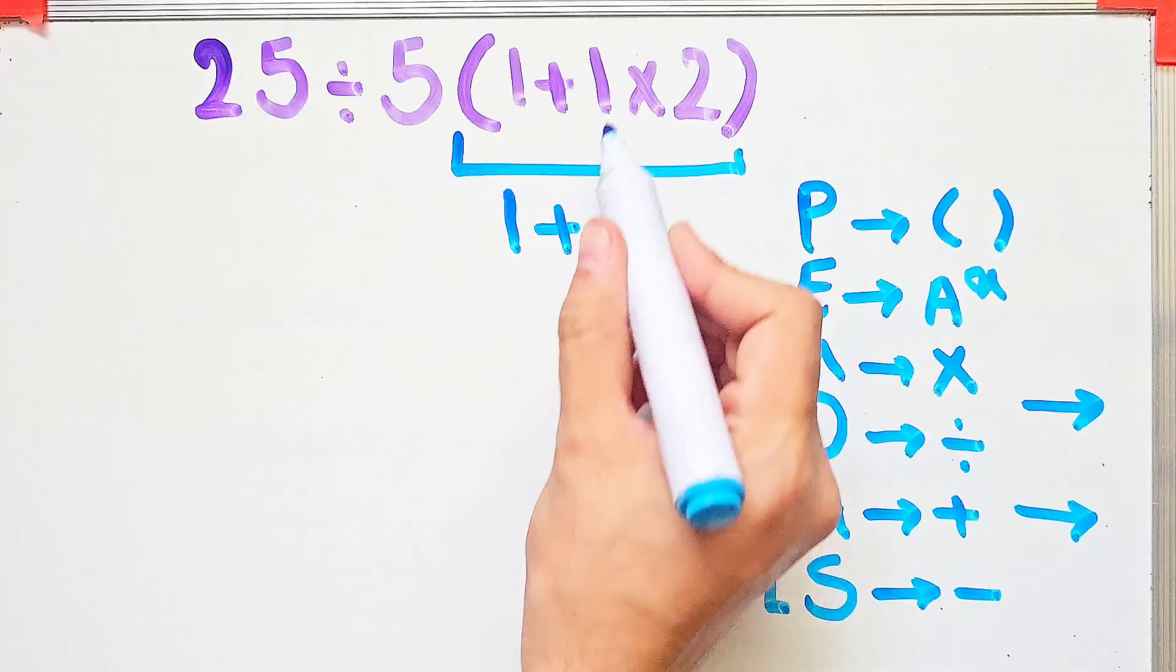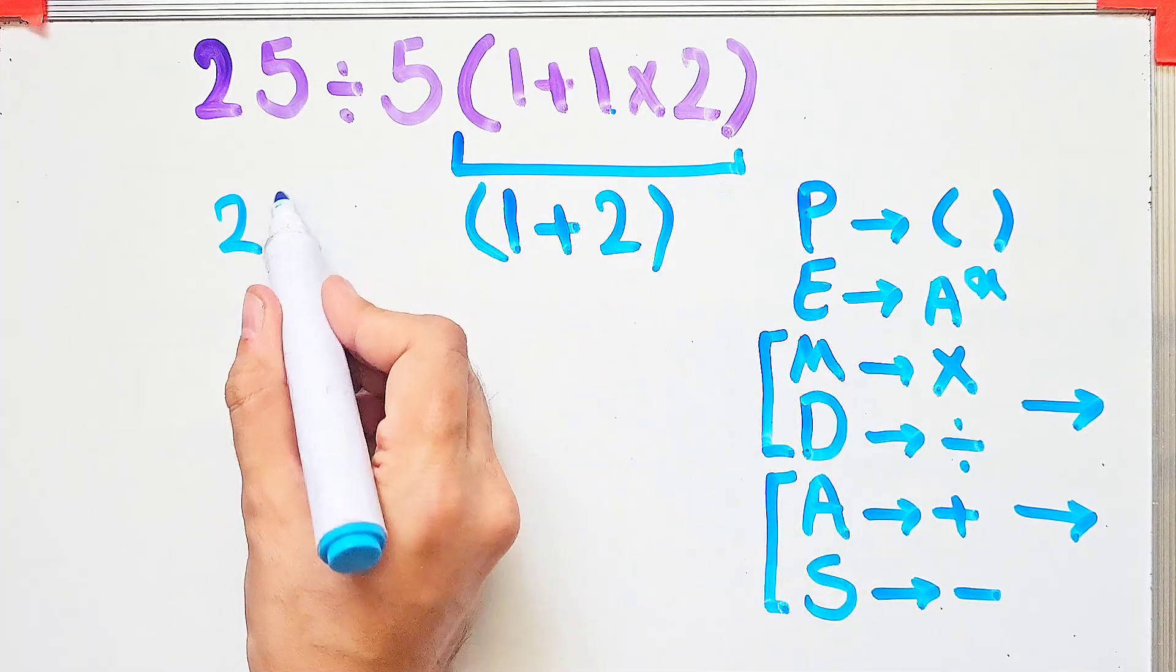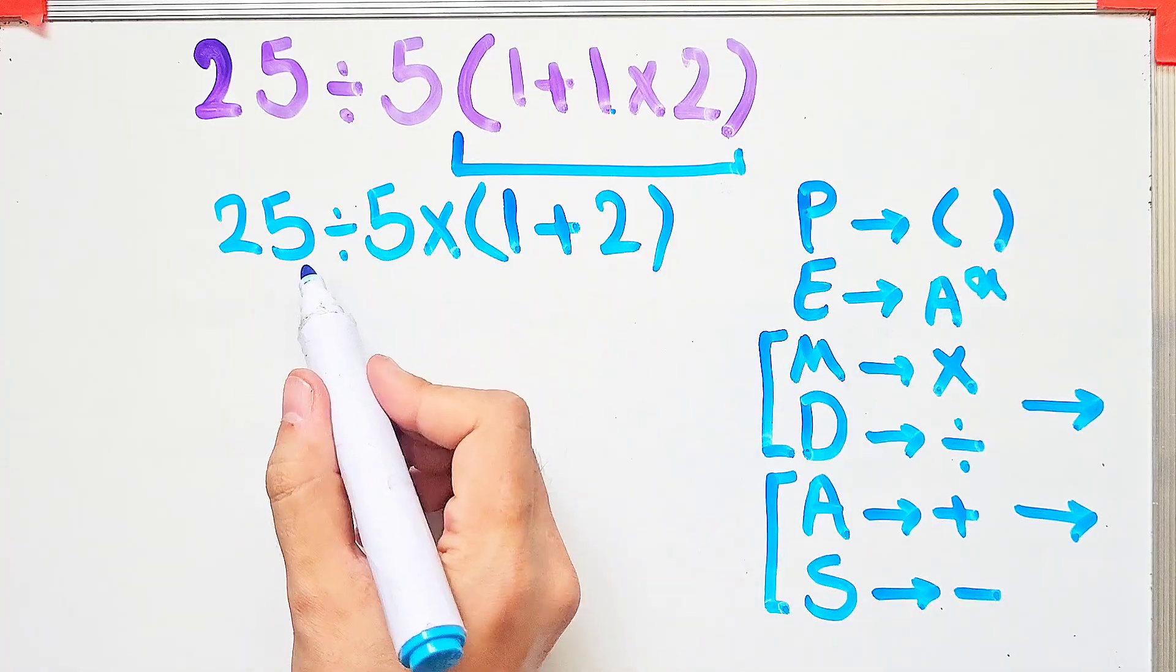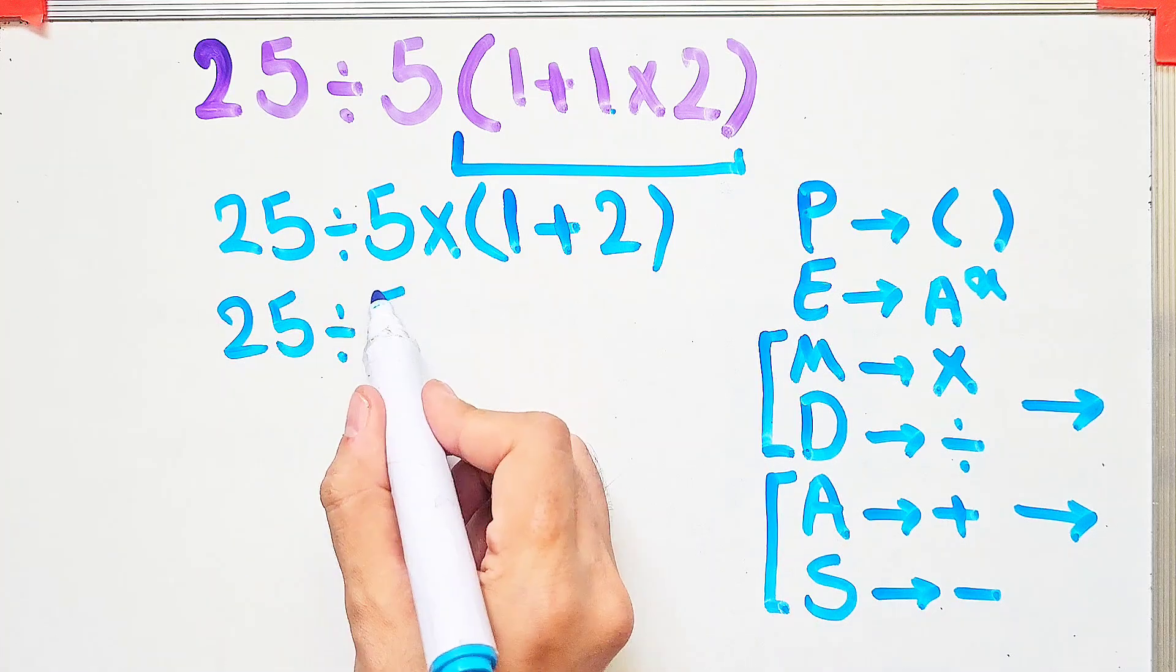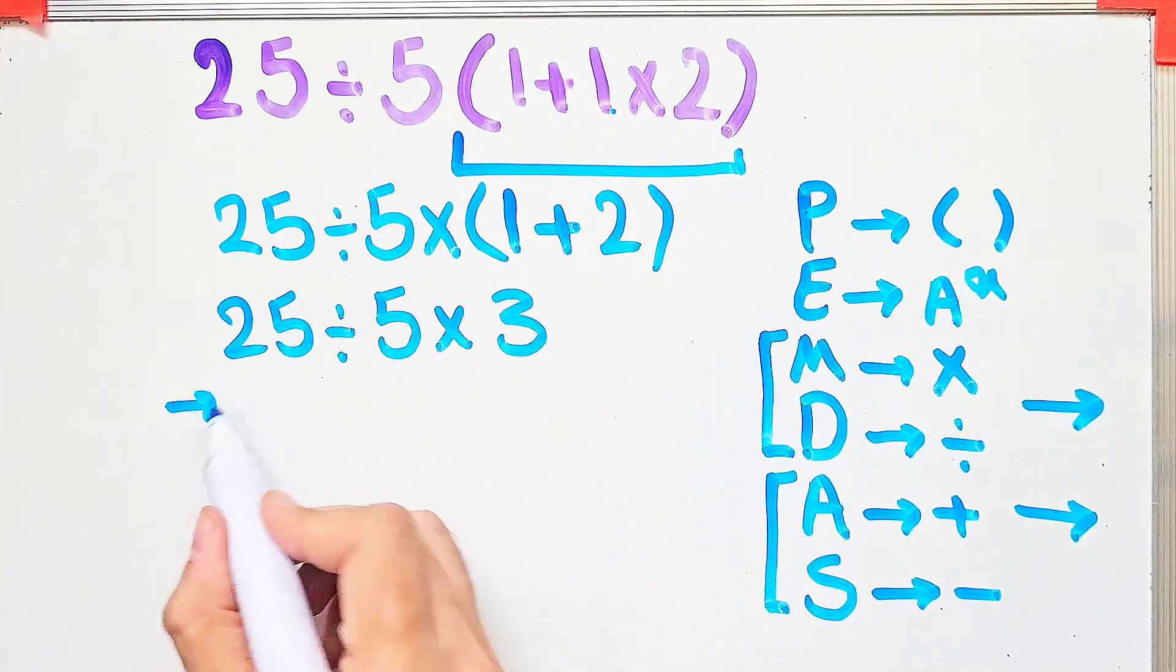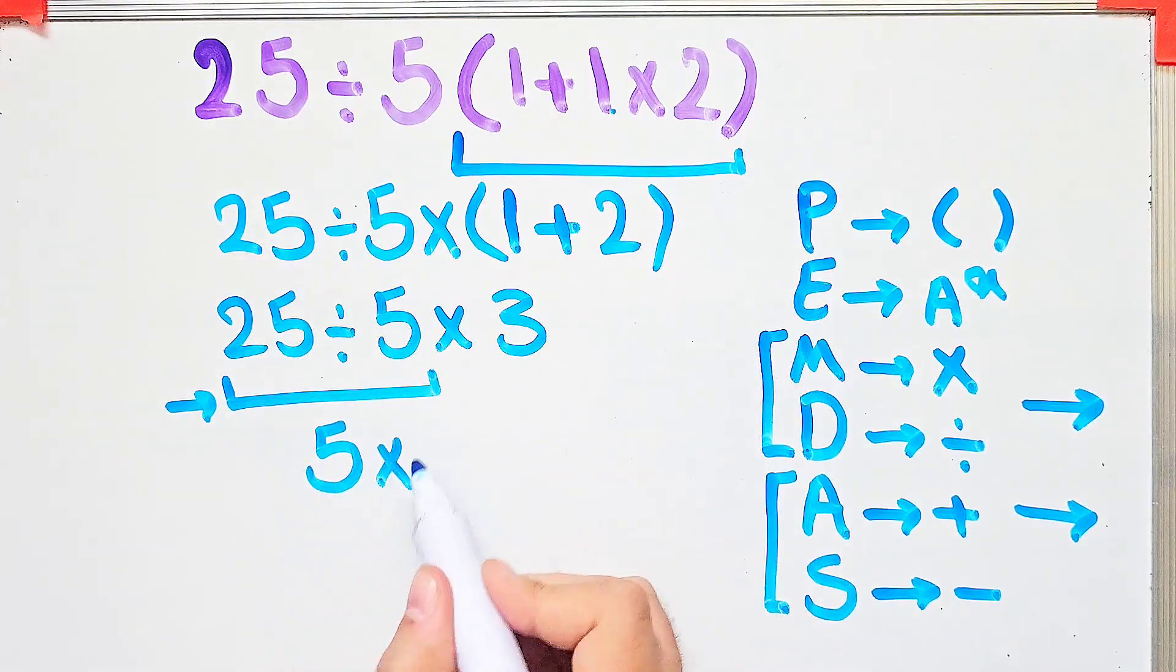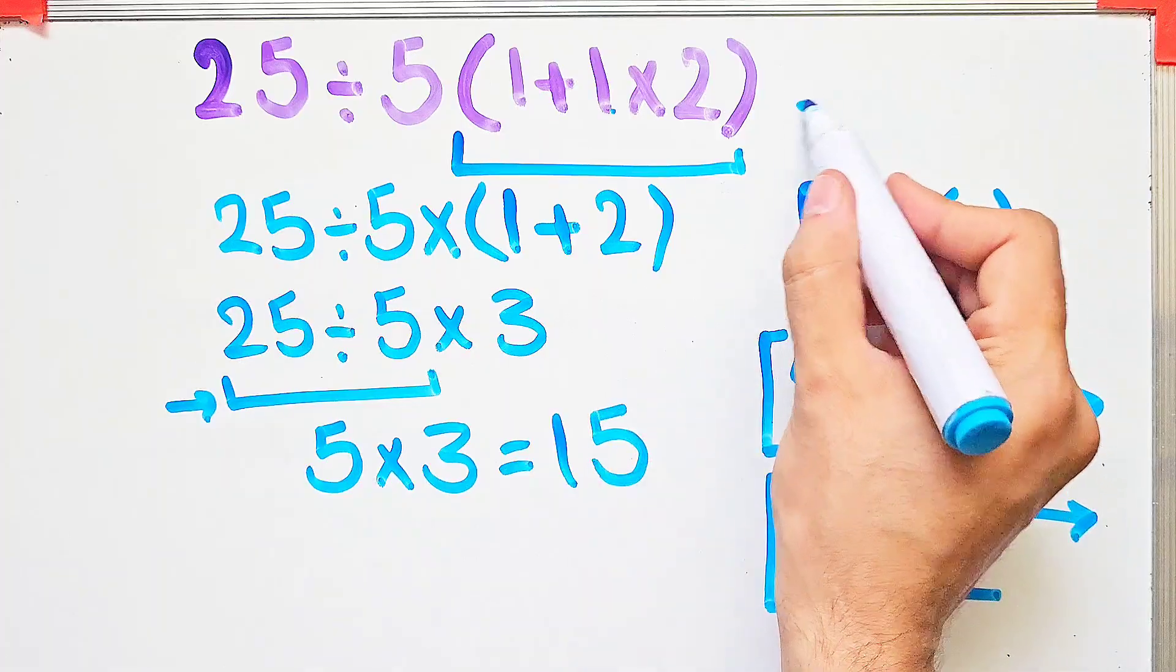First, we simplify the parentheses. Inside the parentheses, we have 1 plus 2. We have 25 divided by 5 then times 1 plus 2, that equals 3. 25 divided by 5 equals 5, and 5 times 3 equals 15. The final answer is 15.